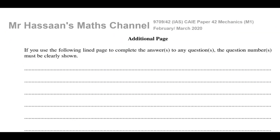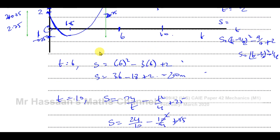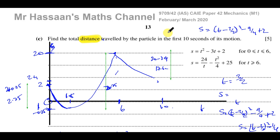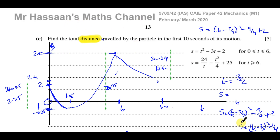That answers part C and wraps up this paper. Other questions from this particular paper can be found in the playlist appearing in the top right of the screen. Other questions on the topic of variable acceleration can be found in the playlist at the bottom right. You can subscribe to the channel and find a guide on how to use it from the link provided. Thank you for watching and see you soon.